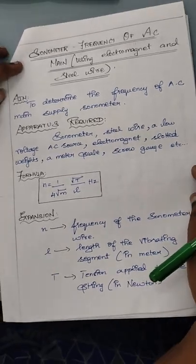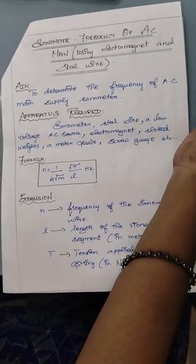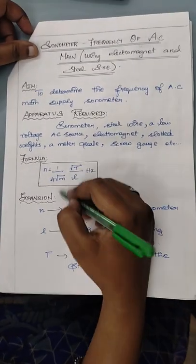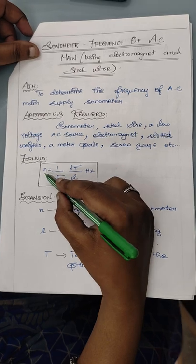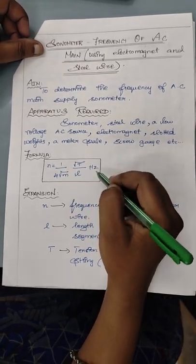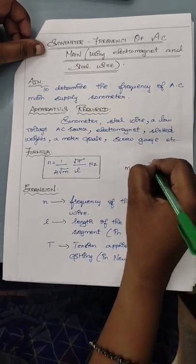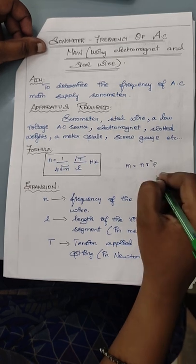So let's see the calculation for sonometer, finding frequency of AC. We are using electromagnet and steel wire. The frequency μ is equal to 1 by 4 root M times root T by L. Y is equal to πR²ρ, where ρ is nothing but the density of the steel wire.